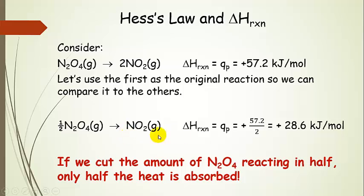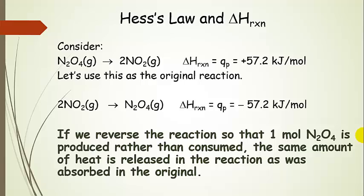We divided the coefficients by two, so we have to divide delta H reaction by two. Bottom line: if we cut the amount of dinitrogen tetraoxide in half, then only half the heat is absorbed. Now, comparing the first reaction to the last reaction — we've taken the products and made them into reactants, and our reactant is now our product. Basically, we've reversed the chemical reaction. When we look at delta H reaction, it's the same magnitude but opposite sign. So when we reverse a reaction, delta H reaction is the original with the opposite sign.